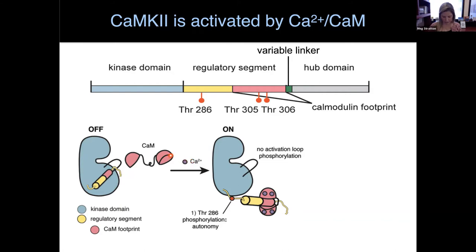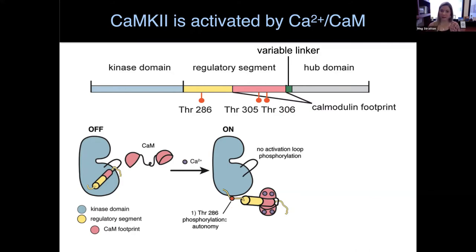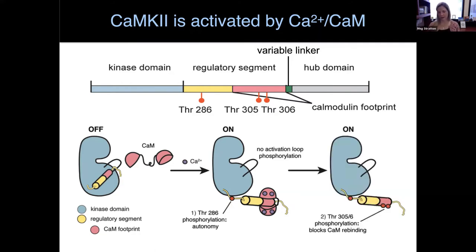In the presence of calcium, calcium-calmodulin will bind to this binding segment, competitively displacing the regulatory segment and opening up the substrate binding pocket, allowing for phosphorylation of CaMK2 itself — autophosphorylation — as well as many other targets downstream. This first autophosphorylation event at T286 is quite special: phosphorylation here keeps the enzyme in an on conformation even when calcium goes away. So as long as T286 is phosphorylated, even when calcium-calmodulin dissociates, there's still activity in this enzyme — a kind of long-lived behavior.